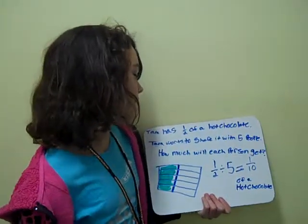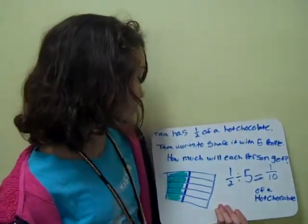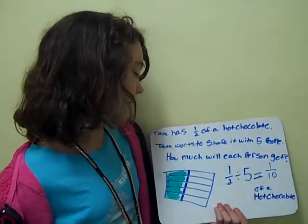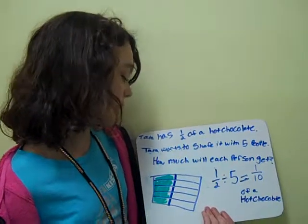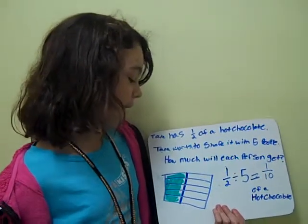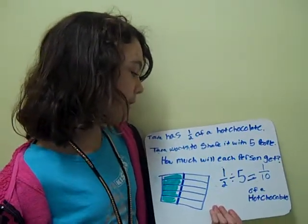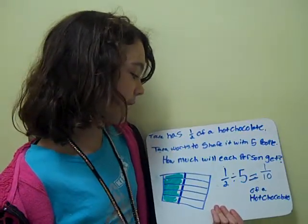Tala has one half of a hot chocolate. Tala wants to share it with five people. How much will each person get?